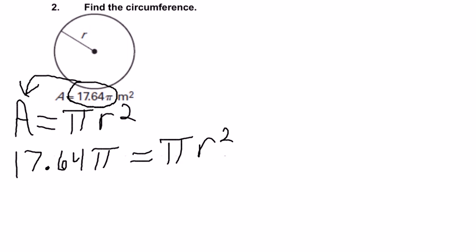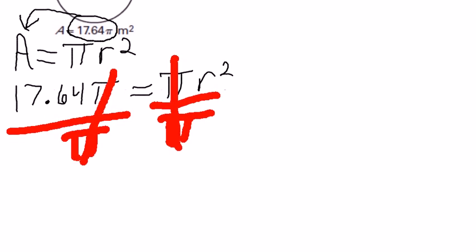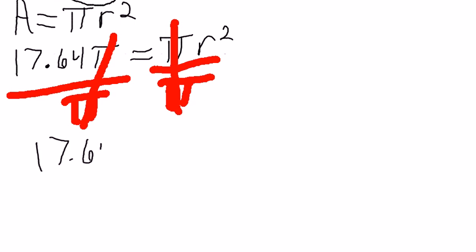That's going to be one of the first things I do. If I want to get r by itself so I can find the radius, I'm going to divide both sides by π. That will cancel out π from both sides, so now I'll just have 17.64 = r².